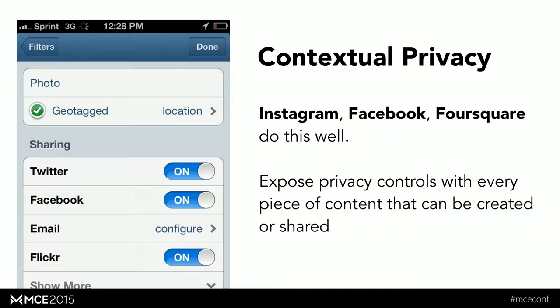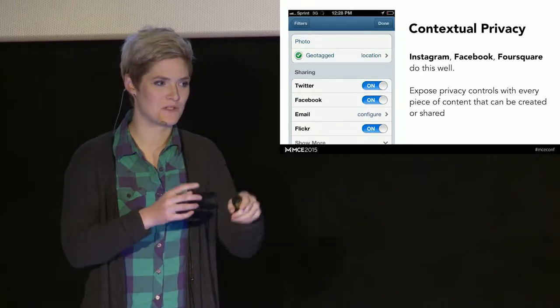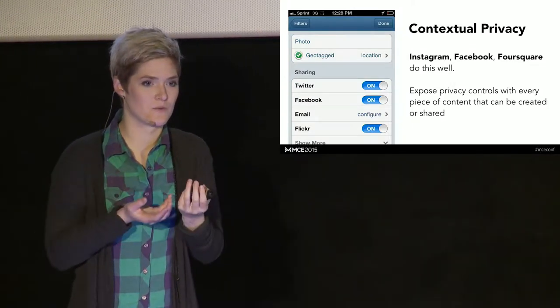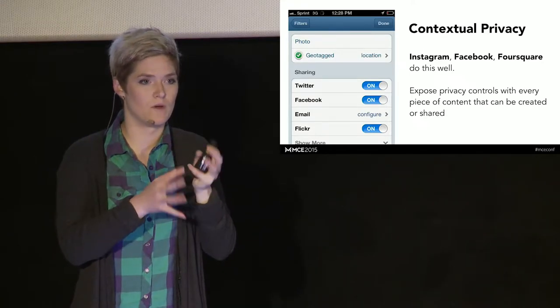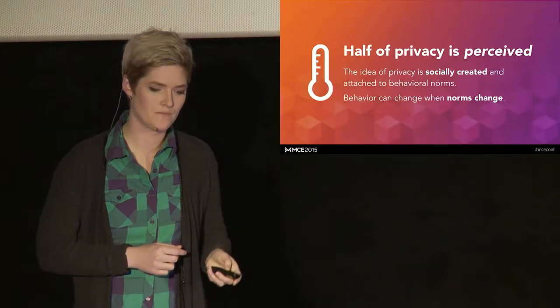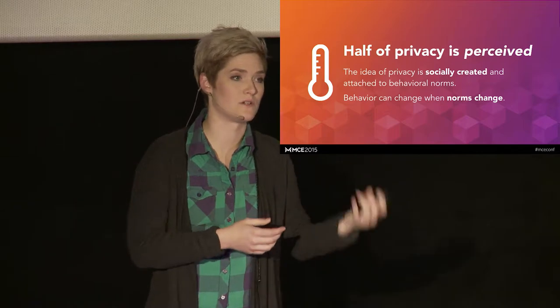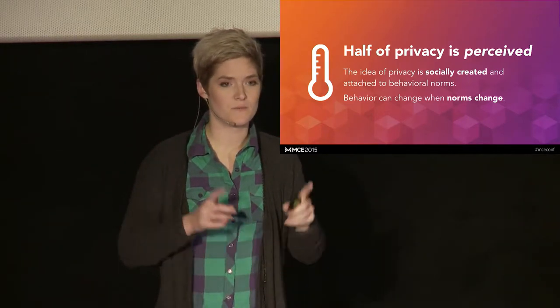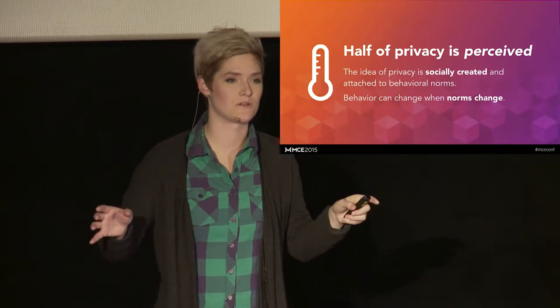So contextual privacy works out pretty well where when you share a piece of content you are given the privacy options then versus futzing with 50 pages of privacy options to set everything up. Contextual works a lot better because it's in the moment that you're sharing you know what you're sharing and who you want to share it to. And then half of privacy is perceived. Right? So it's this kind of social creation of people feeling like they're okay with sharing a certain piece of data. But the behavior can change when a norm changes. So people's norms change all the time with technology.